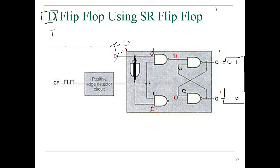By using an SR flip-flop, we can design a CSR flip-flop, SR flip-flop, or delay flip-flop, but not a true toggle flip-flop — it has the race-around condition problem. This race-around condition can be overcome by using a JK flip-flop. We will see that in the next part.